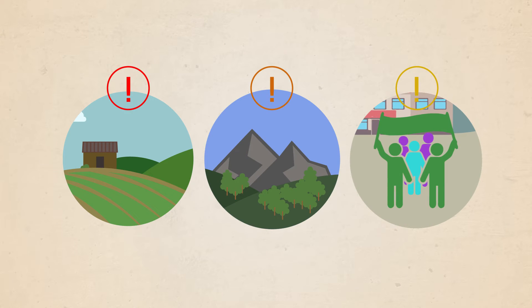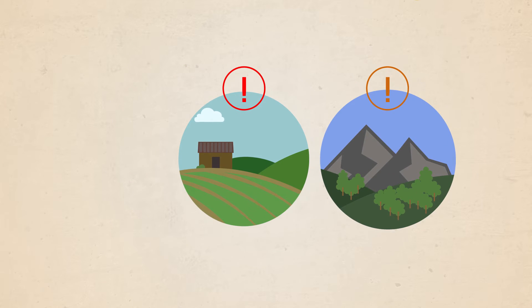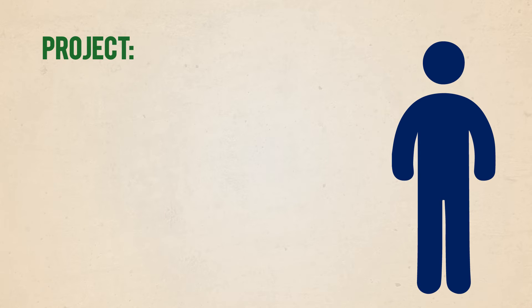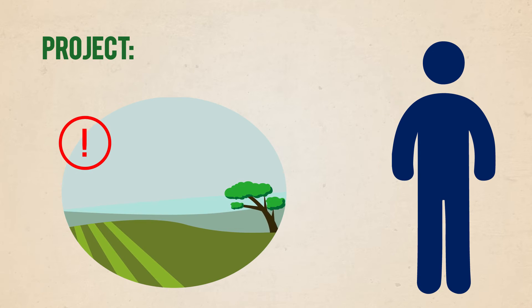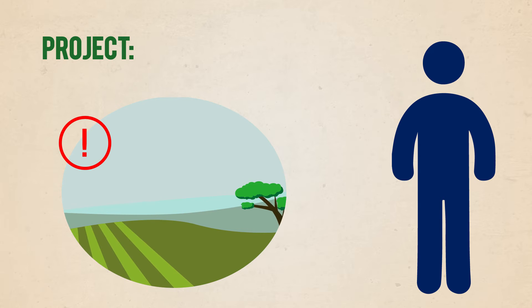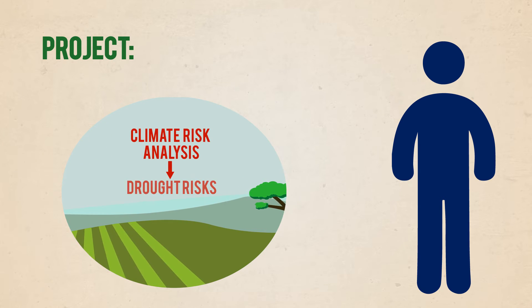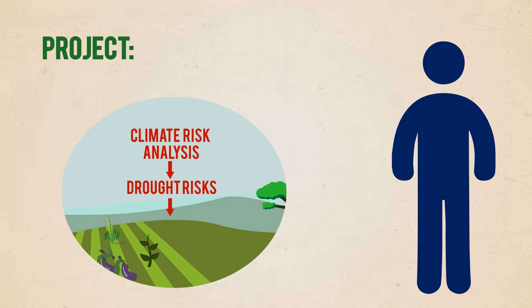Nothing more is required for sectors rated as low climate risk, whereas further analyses and additional actions may be needed for programming in sectors with moderate and high climate risk. At the project level, when an agriculture officer sees that her sector was rated high risk in the CDCS, the project design team decides to conduct a more detailed climate risk analysis and then addresses the risk of increased drought by using drought-resilient varieties and including crop diversification.